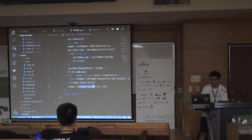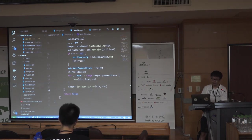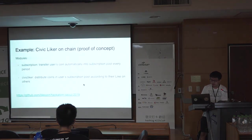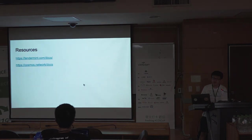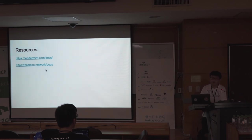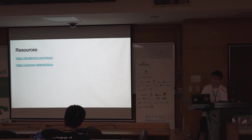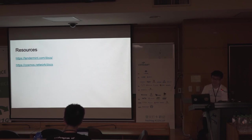I think I have no time left. So this is the basic architecture of how you write a Cosmos module. If you need any reference or resources, you can see the Tendermint documentation and also the Cosmos documentation. The quality of the documentation is quite good, but they do move the documents to other places, so if you encounter a 404 not found, you may need to change the URL slightly. That's the end of this talk. Any questions?